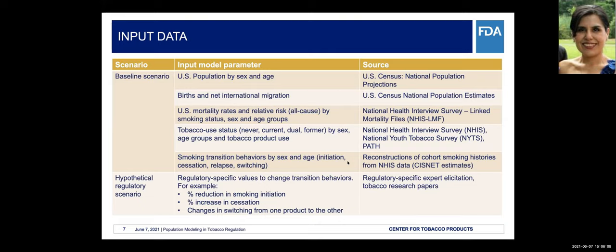For the hypothetical regulatory scenario, there are many challenges. We need regulatory-specific values related to changes in transition behaviors, for example the percentage reduction in smoking initiation and the percentage increase in cessation and switching from one product to another. For those specific parameters, we used regulatory-specific expert elicitation and results from tobacco research literature to populate assumptions and numbers for the policy scenario.